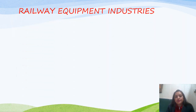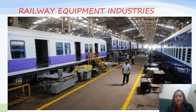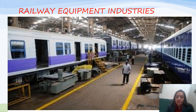The next mineral-based industry is railway equipment industries. As the name suggests, these are the industries where railway items - that means coaches and railway engines - are made. All the railway equipment industries are located in Varanasi, Jamshedpur, Kolkata, and Perambur.